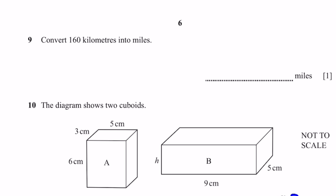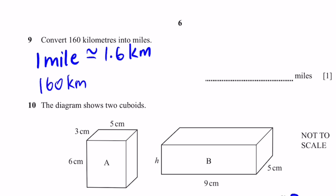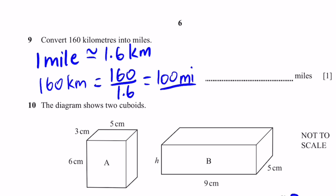Question 9. Convert 160 kilometers into miles. We know that 1 mile is approximately equal to 1.6 kilometers. Therefore 160 kilometers equals 160 divided by 1.6, which equals 100 miles.